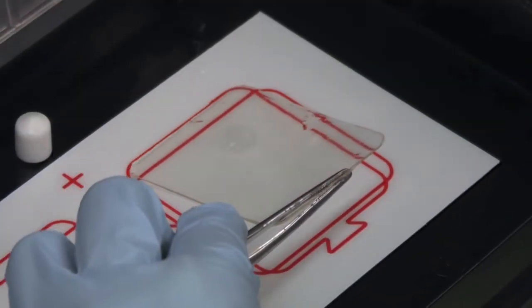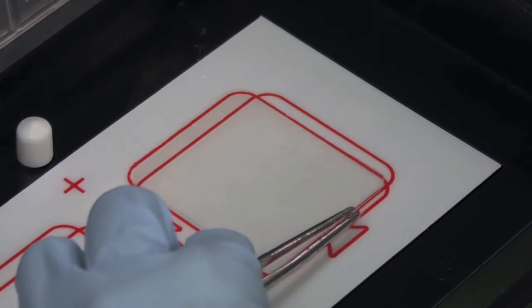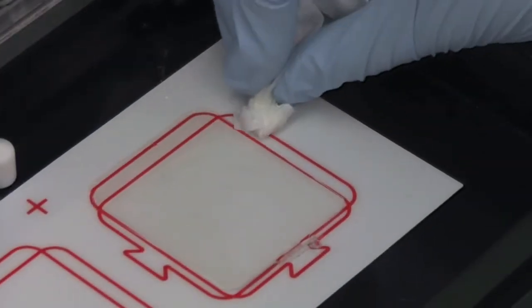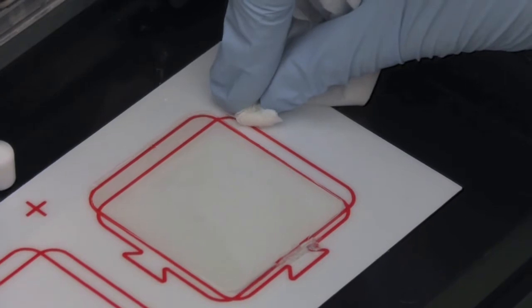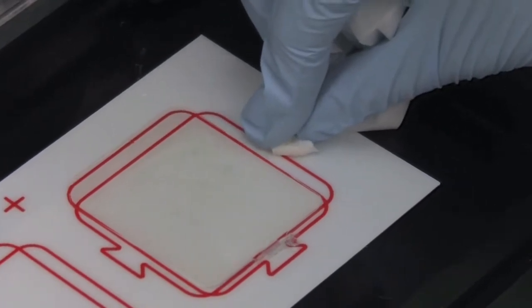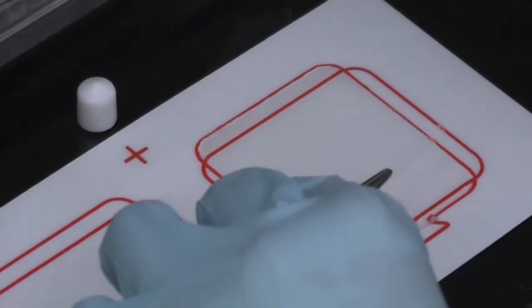Put the gel on the bed and ensure that no air bubbles are trapped. Remove excess dd water by touching the edge with Kim wipes. Remove the top plastic cover off the gel.